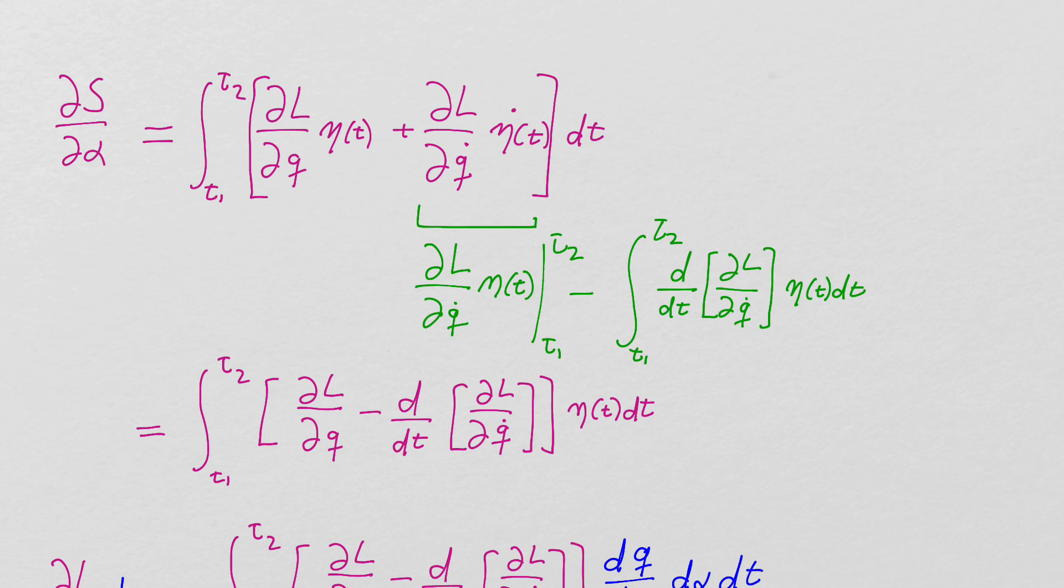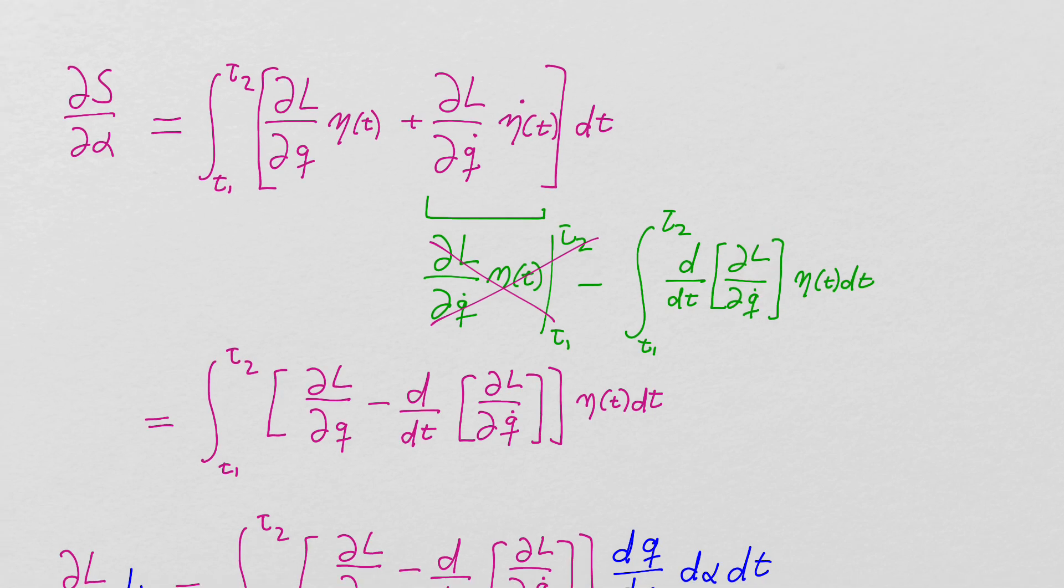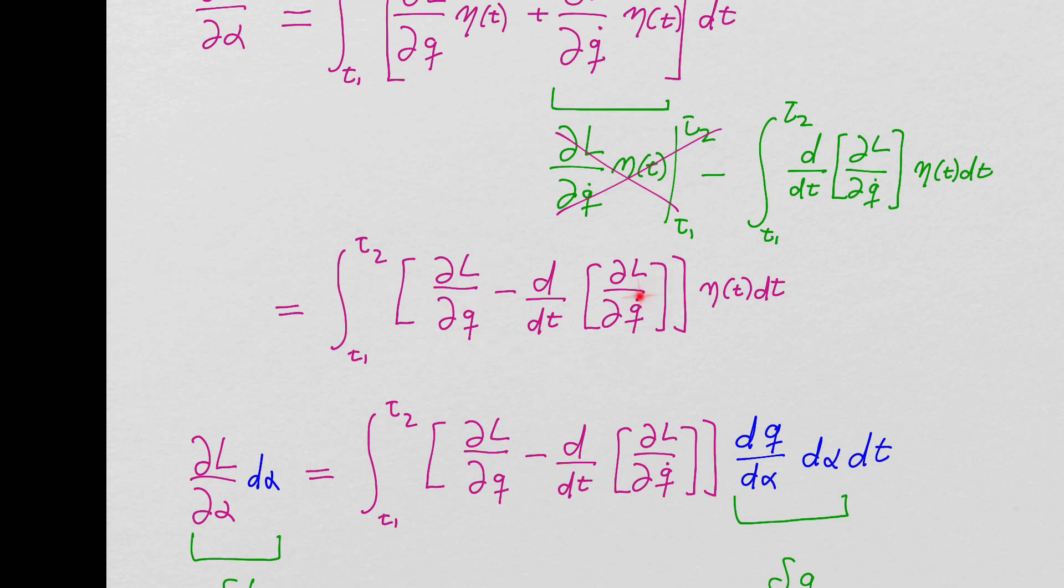So this part goes away. And then this other part does in fact stay, but you'll notice that there's no eta dot, it's been replaced with eta. And we have this derivative term of dL dq dot. And making that substitution gives me this Lagrange equation just like before.